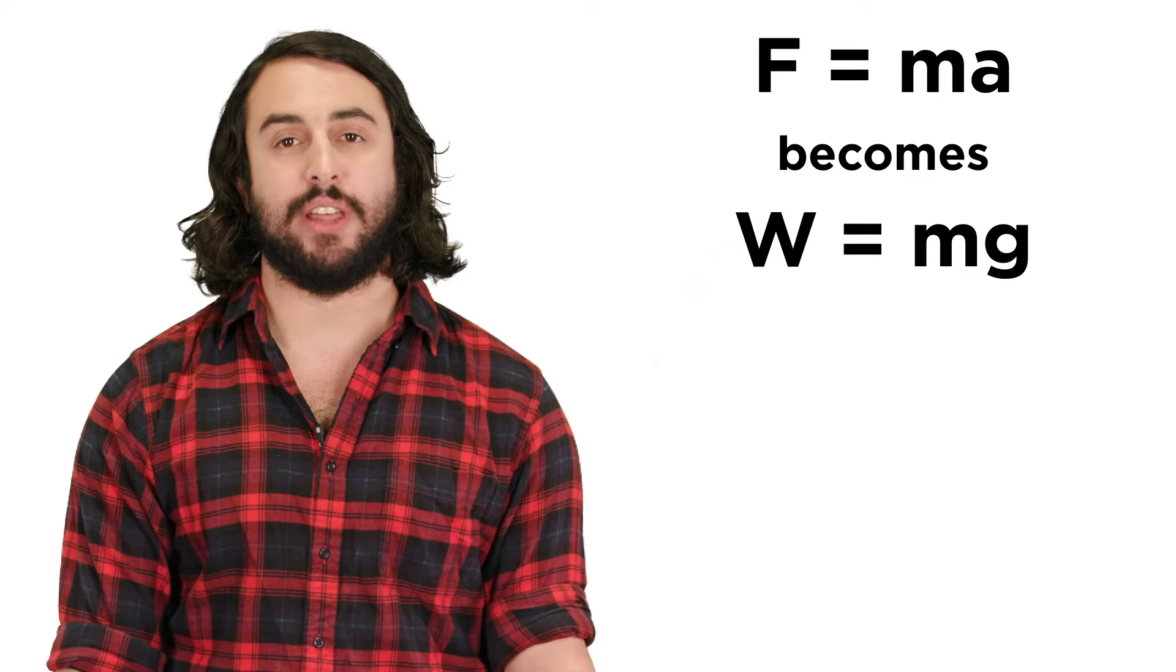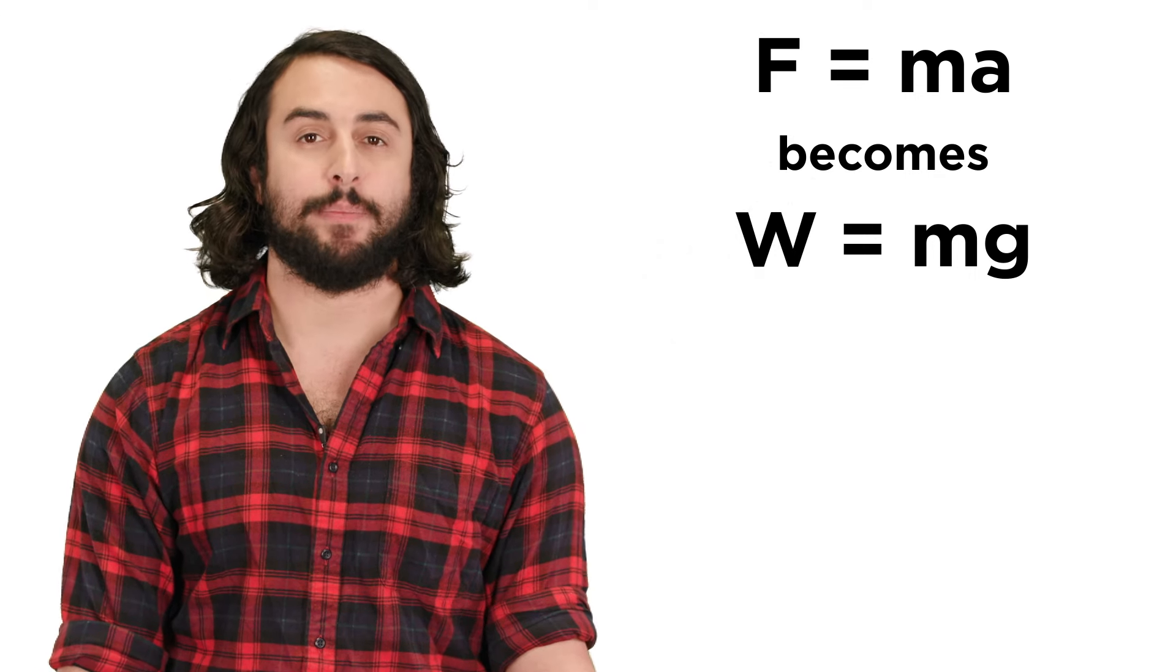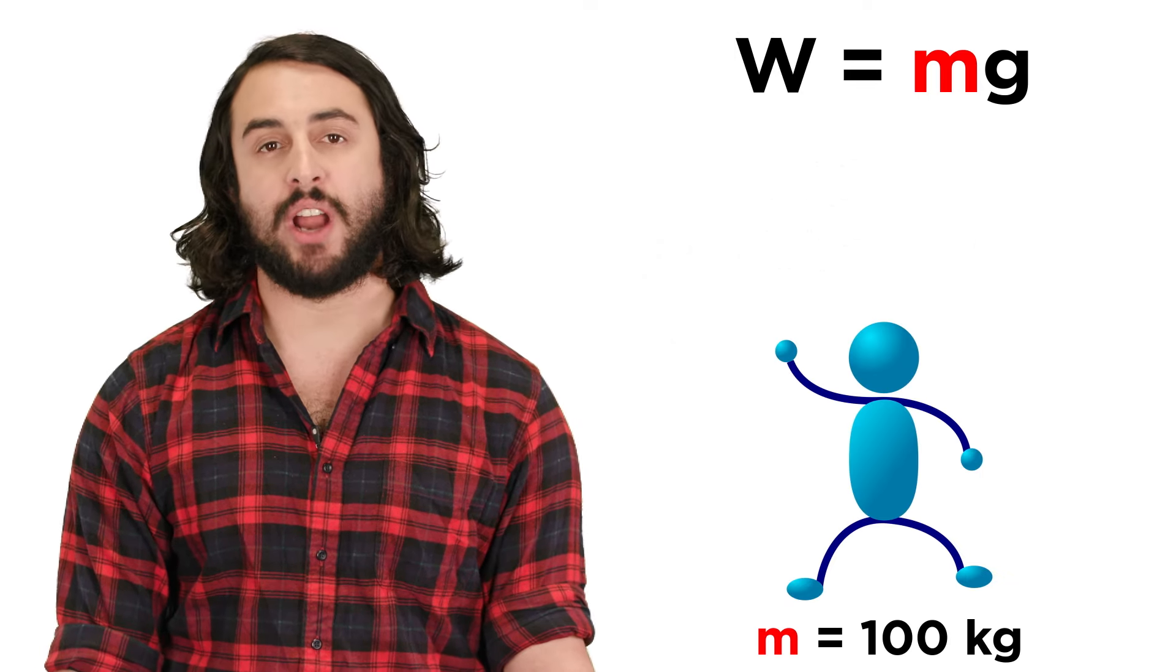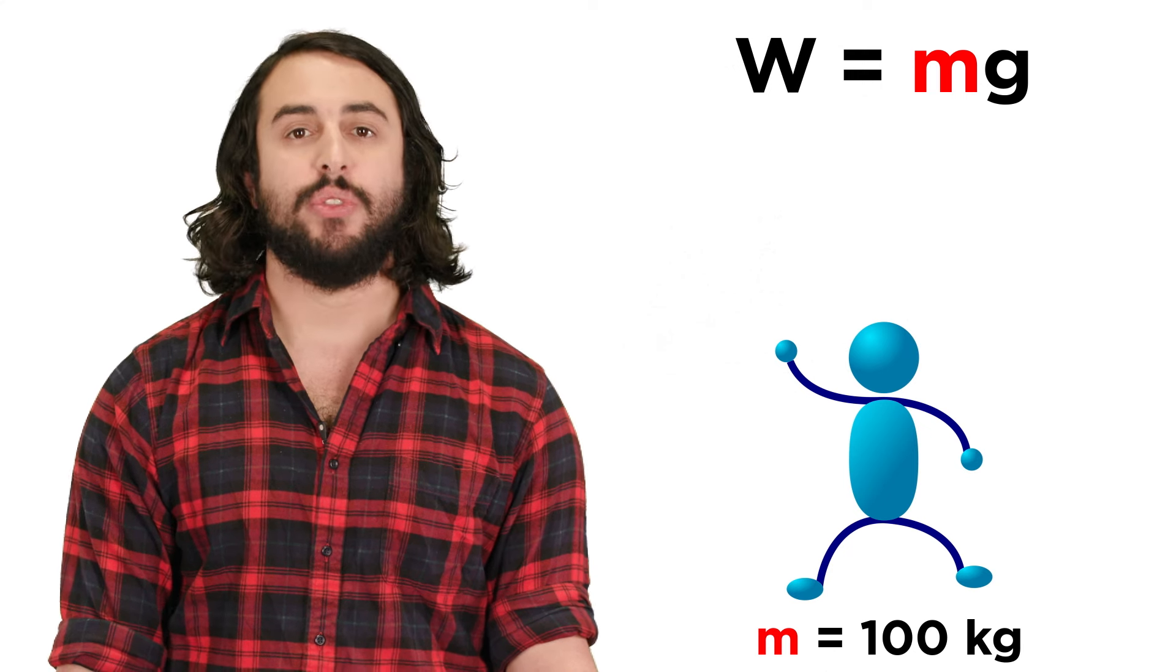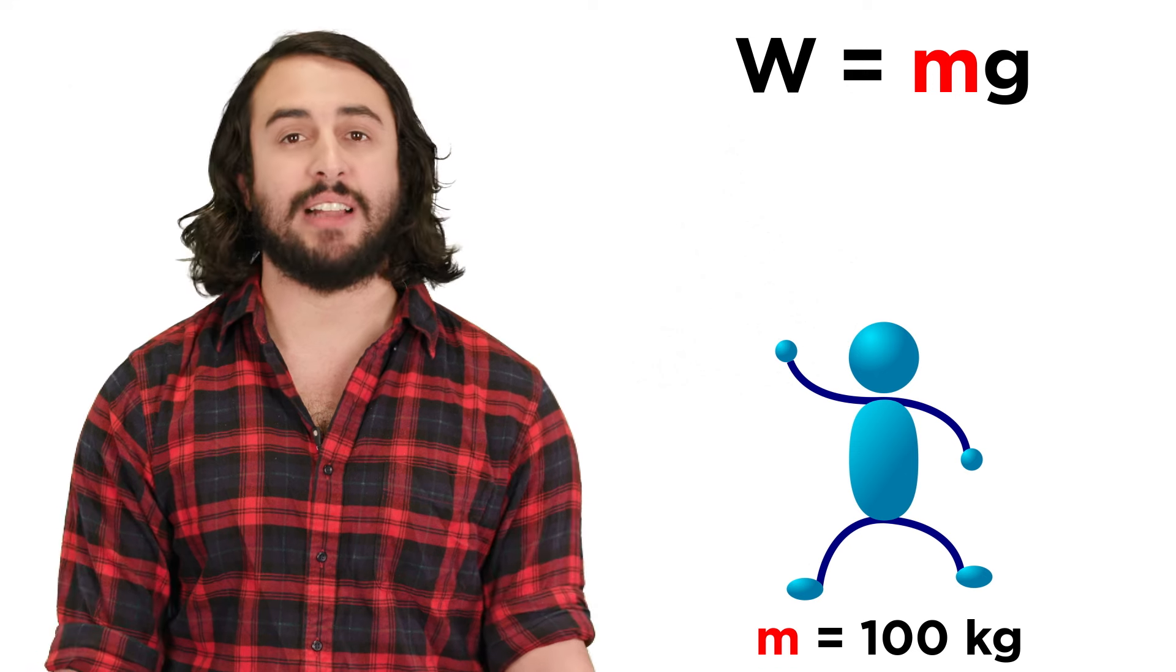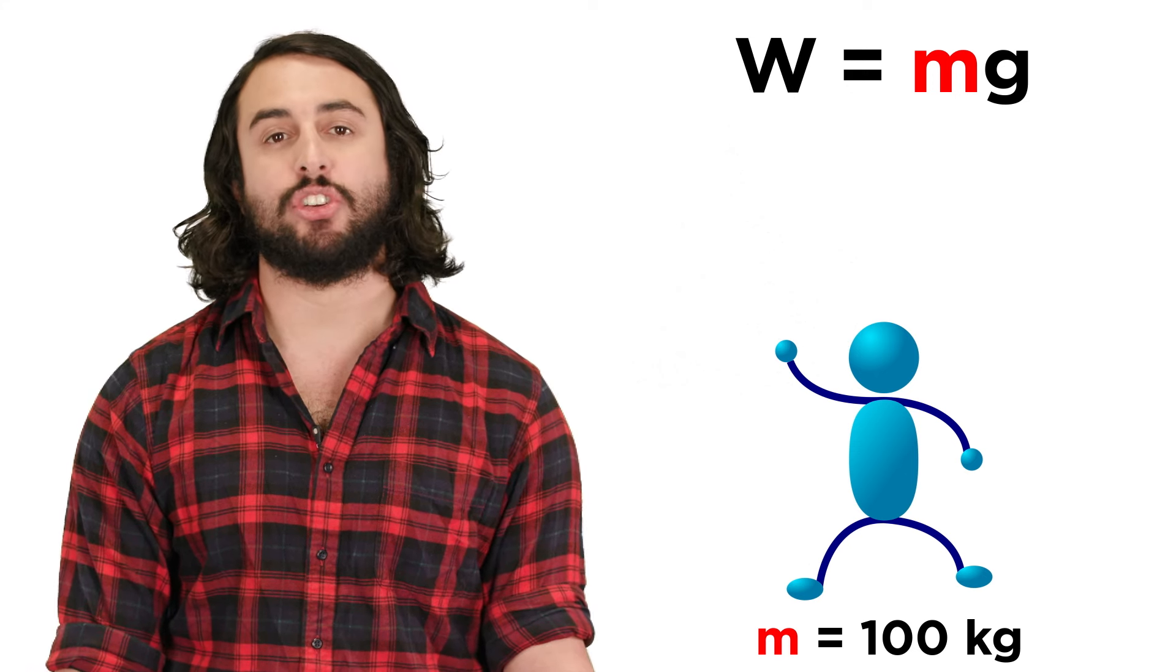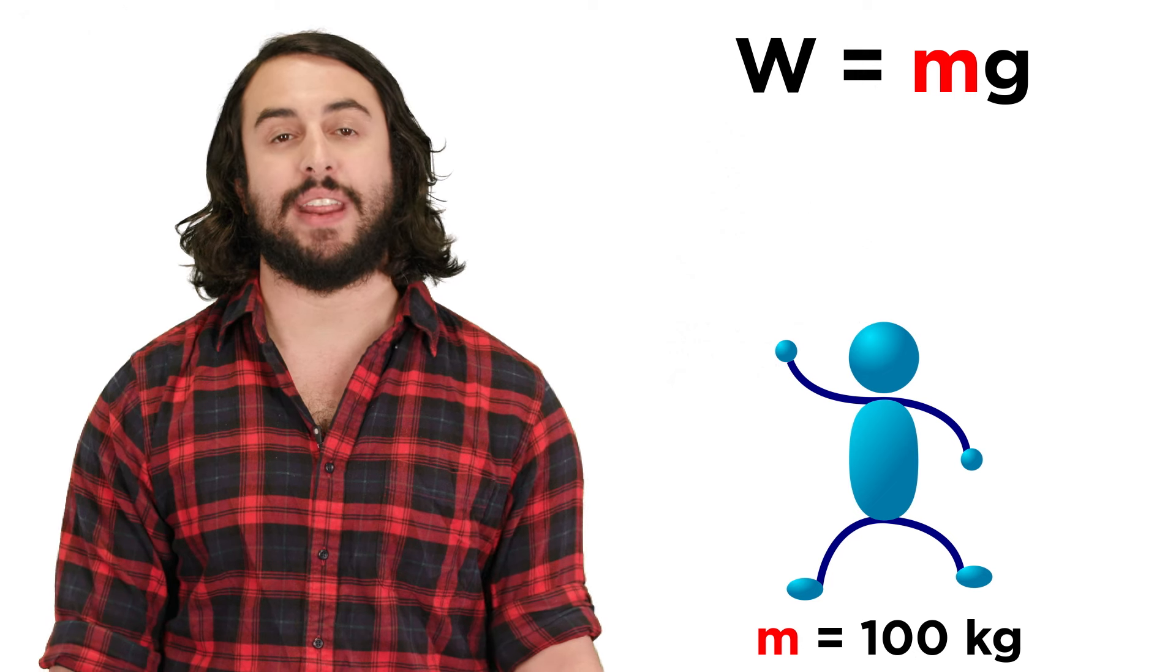Weight can be calculated using Newton's second law, or F equals MA. Take an object like a 100 kilogram person. This value represents the mass of the person, which is more or less constant, barring any huge changes in diet, as it is a measure of the amount of matter in the person.